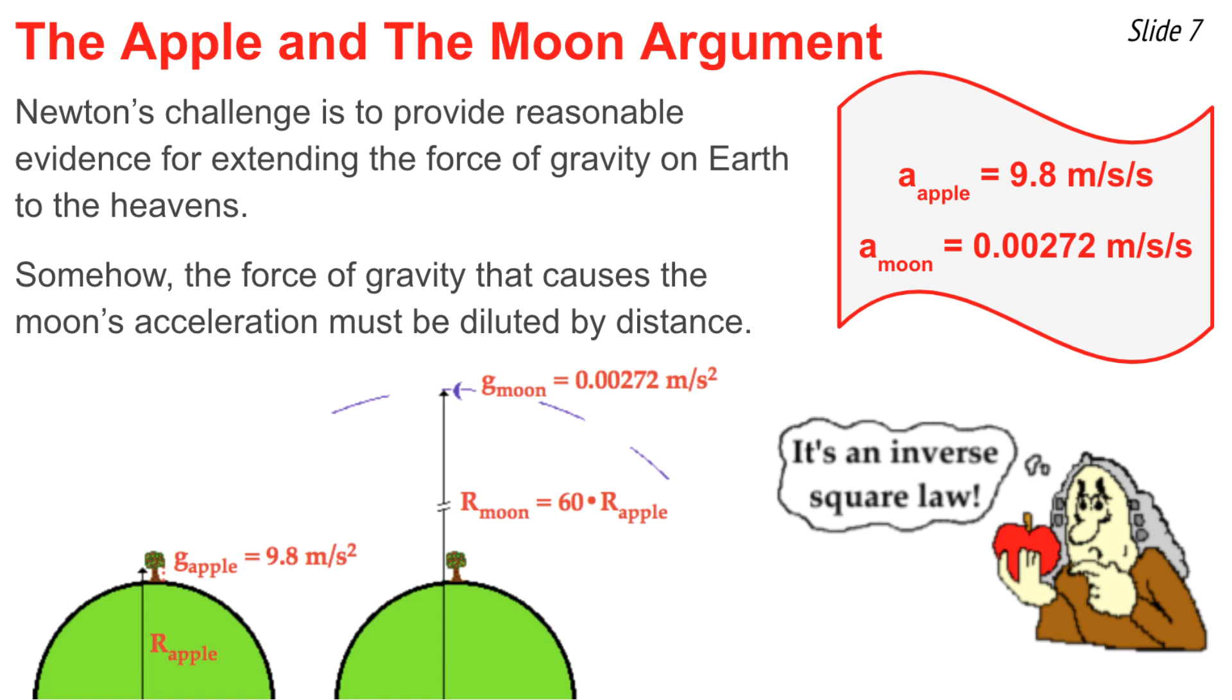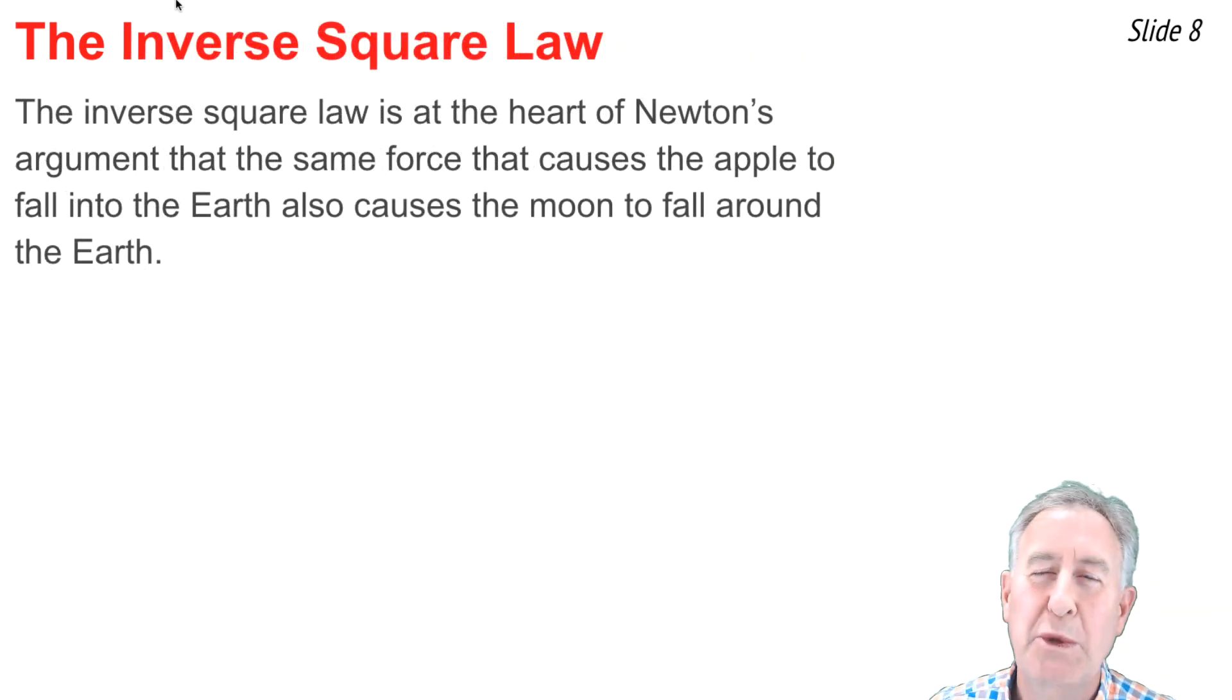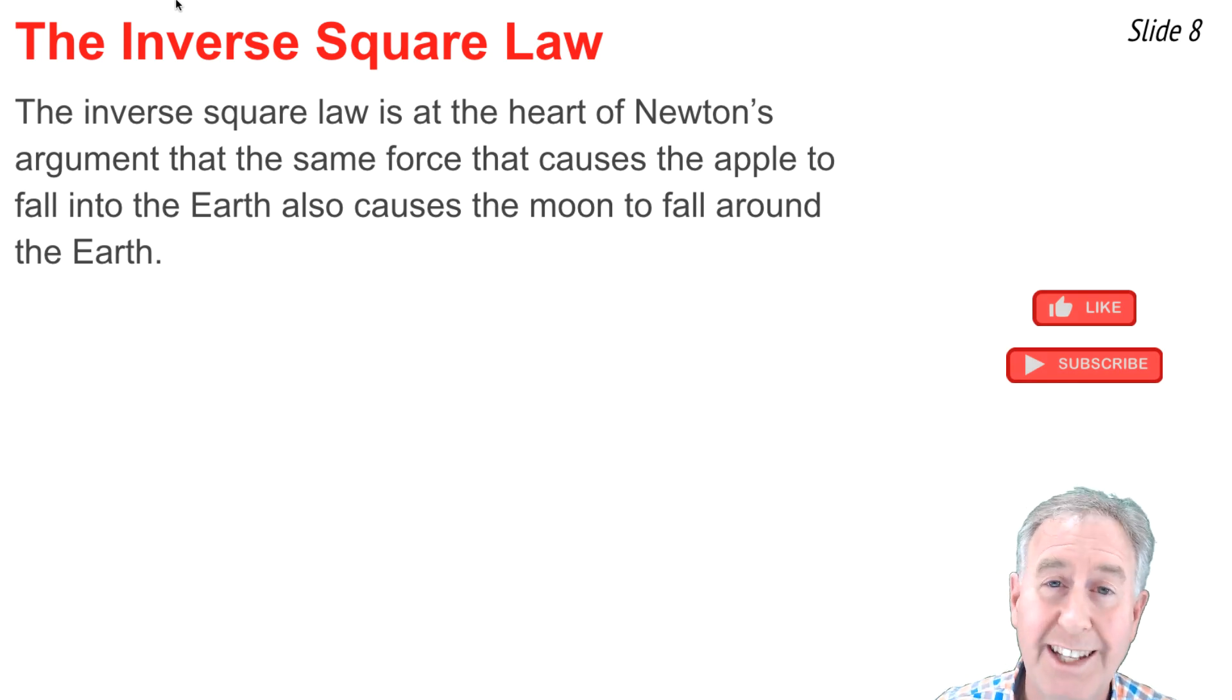The idea is that gravity does become diluted by distance in such a manner that the force of gravity is inversely proportional to the distance an object is from the center of the earth. The inverse square law is at the heart of Newton's argument that the force that causes the apple to free fall into the earth is the same force that causes the moon to free fall around the earth.